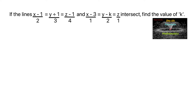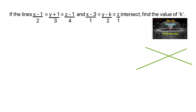If the lines (x−1)/2 = (y+1)/3 = (z−1)/4 and (x−3)/1 = (y−k)/2 = z/1 intersect, we need to find the value of k. The first line passes through the point (1, −1, 1) and the second line passes through the point (3, k, 0). Since these two lines are intersecting at a point, we need to find the value of k.